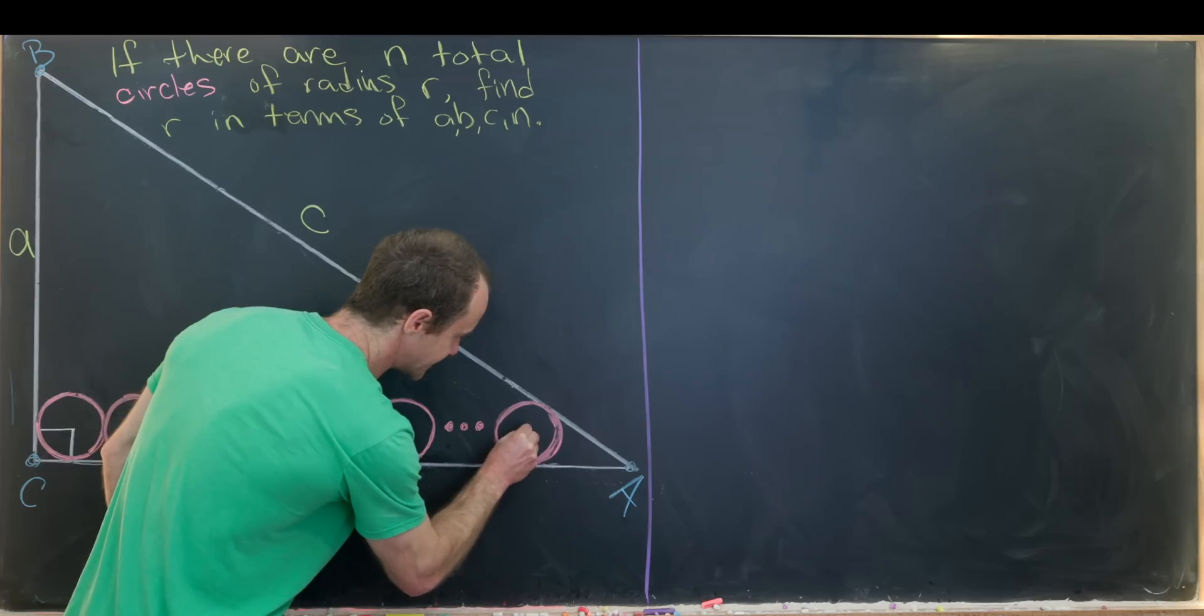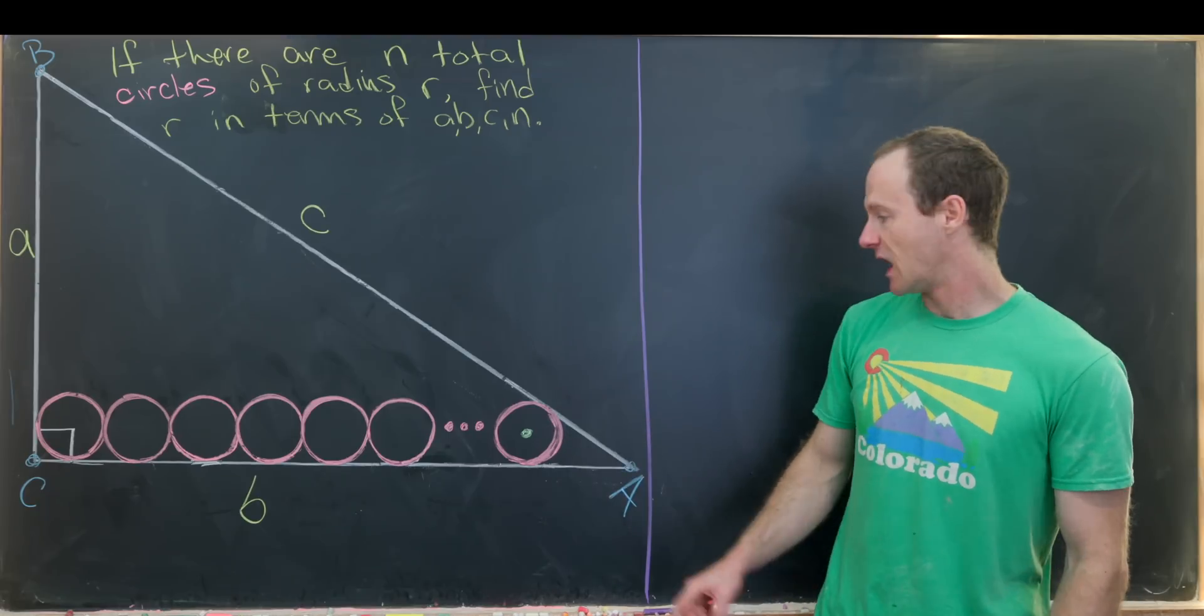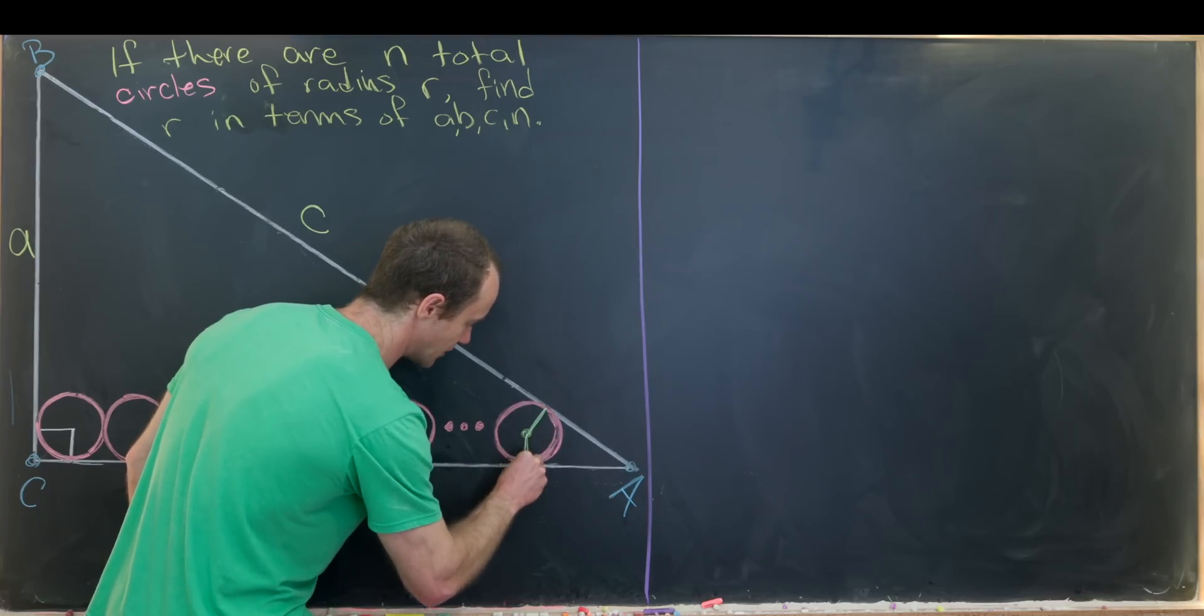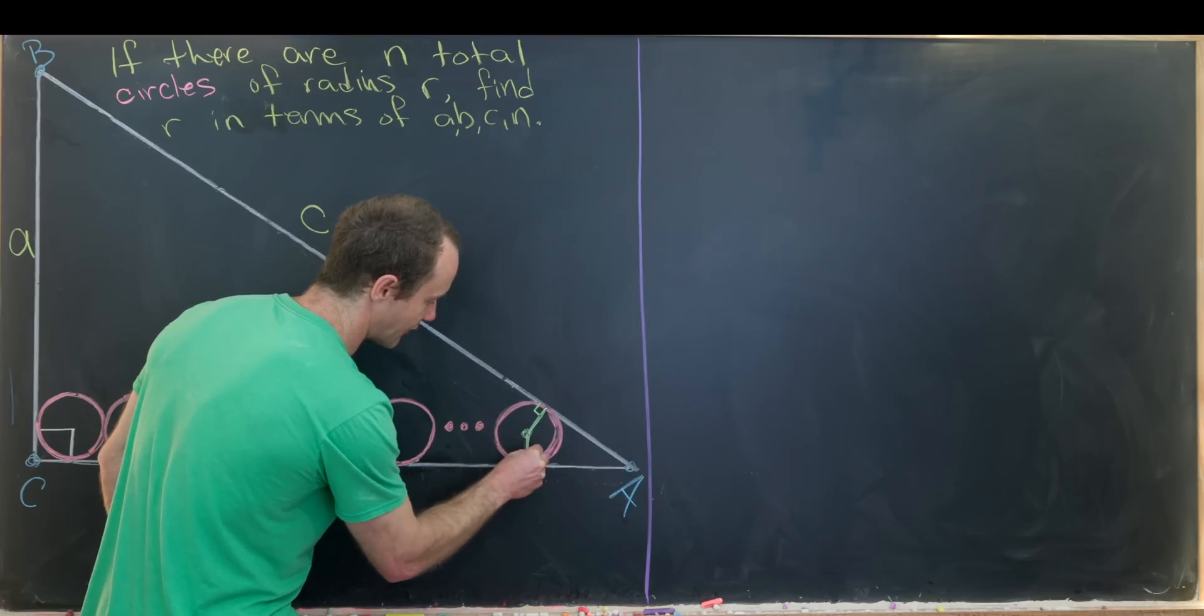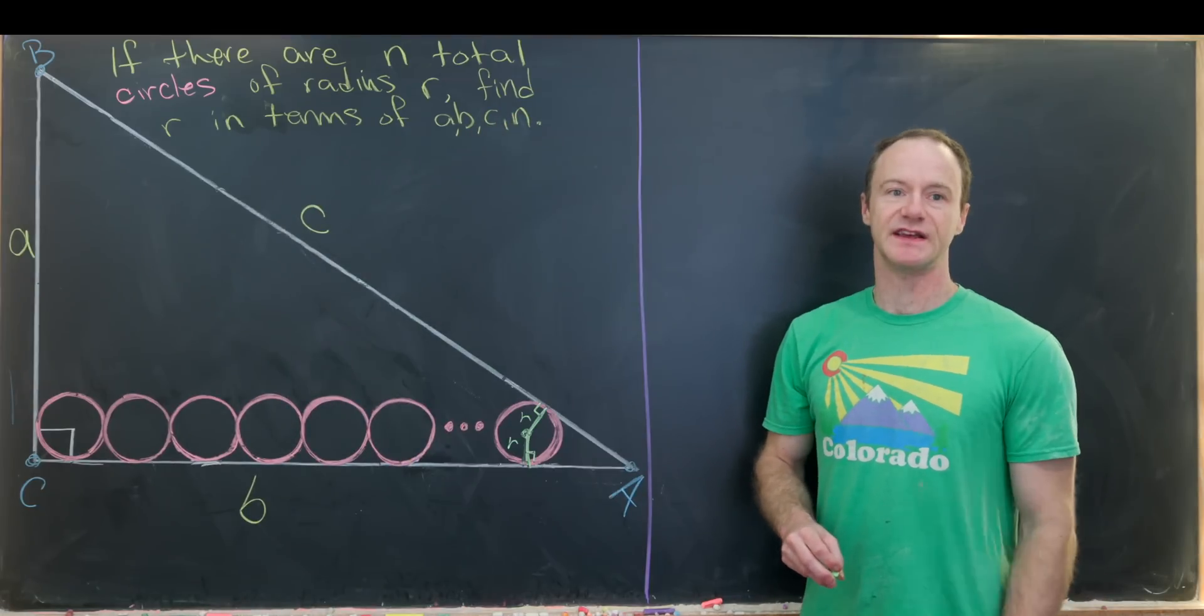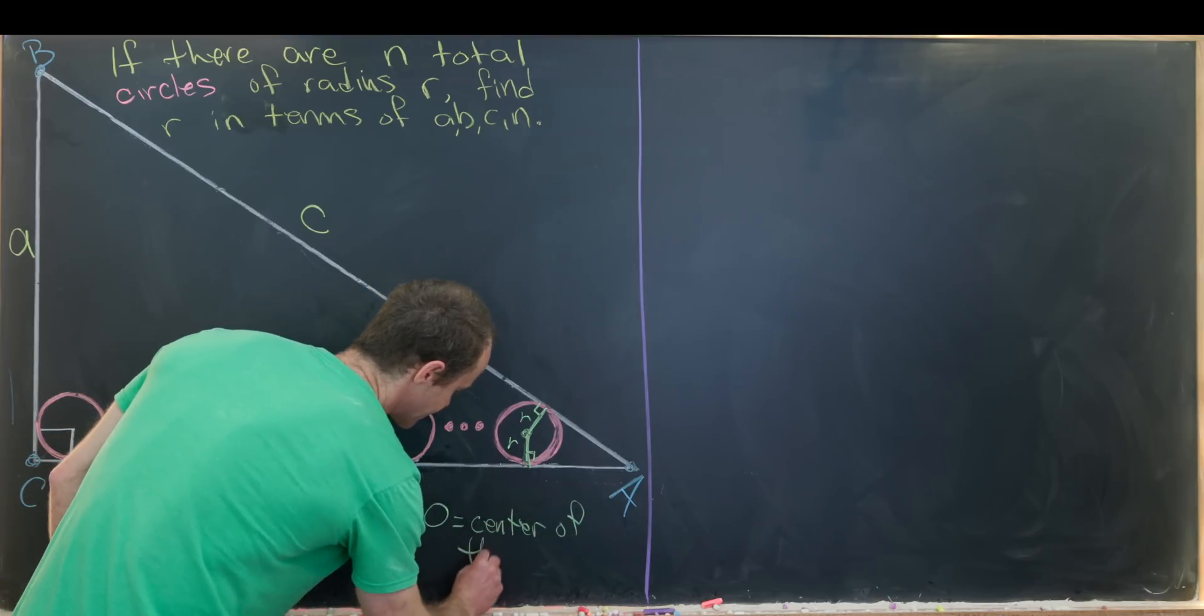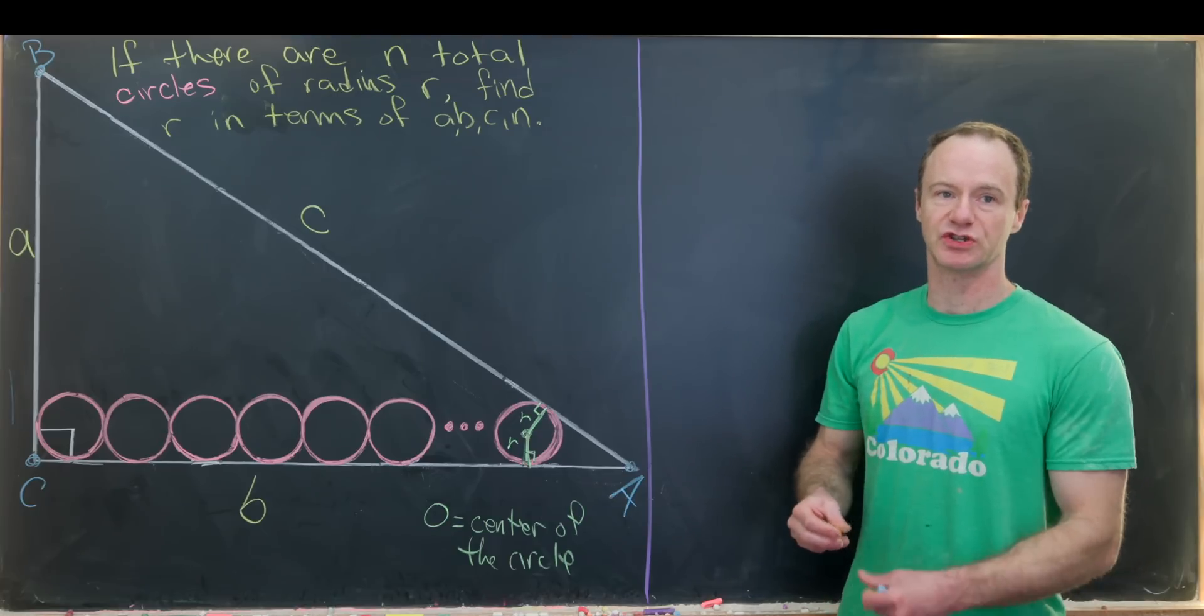There's the center of our rightmost circle. And then I'll take a radius from this center to the edge of the circle, and I want to do that so I intersect this larger triangle ABC at a right angle. That's because we have this circle is tangent to the triangle. So I've got a right angle there and a right angle there, and each of those lengths are R. I'm also going to label this point O as the center of the circle, the rightmost circle.